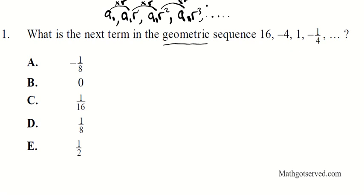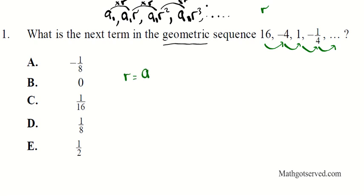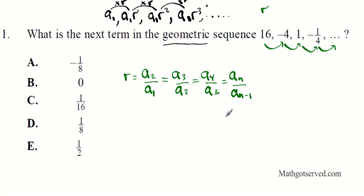We are multiplying by the same number each time. So from the first term to the second I multiply by a certain number, and then from negative 4 to 1 I multiply by that same number, and so on. When I figure out what that number is and multiply negative one-fourth by it, that will tell me the answer. The general formula is simply aₙ divided by aₙ₋₁ — term divided by the term before it gives you the common ratio.